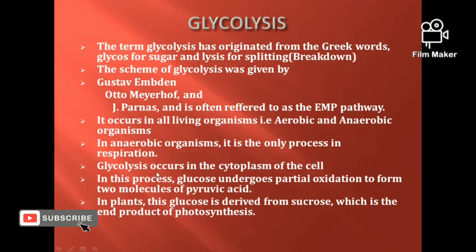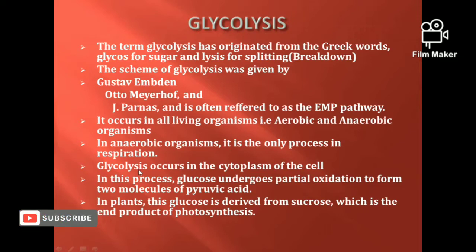Glycolysis occurs in the cytoplasm of the cell. In this process, glucose undergoes partial oxidation to form two molecules of pyruvic acid. This is the end product of glycolysis.